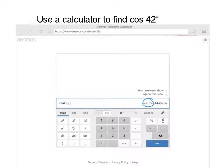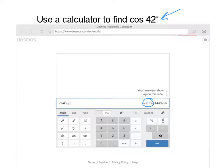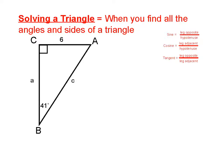For those problems, just type in the correct function — either sine, cosine, or tangent — then type in the degrees, and round off your answer to whatever they want. Those are pretty easy. Next, they're going to have you solve a triangle. When they say solve a triangle, what they mean is find all the missing sides and all the missing angles of that triangle.